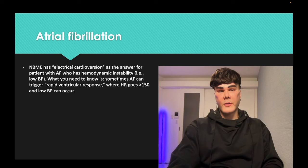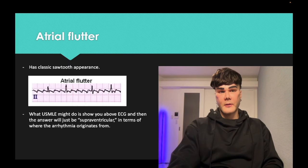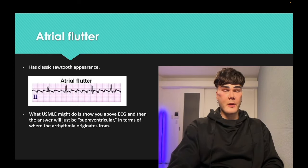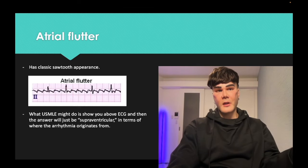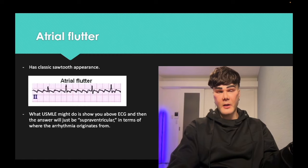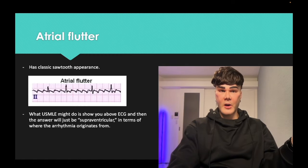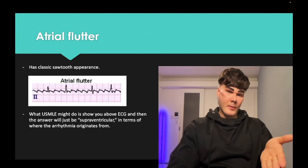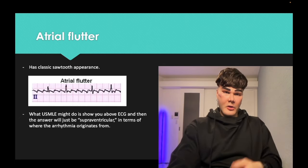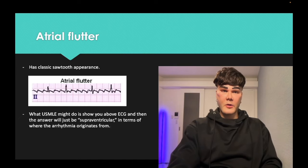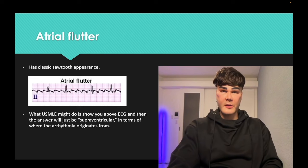Atrial flutter — you should just know what this ECG looks like. It's a sawtooth appearance. It's actually pretty low yield for USMLE — maybe one question. They could give you this ECG and you recognize the sawtooth as atrial flutter, and then the answer is just supraventricular as to where it originates.